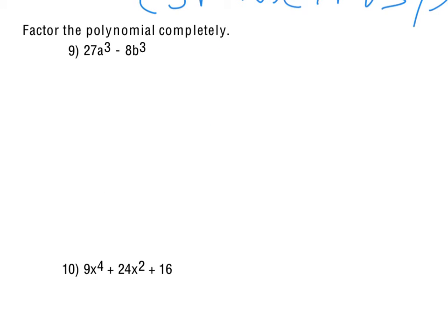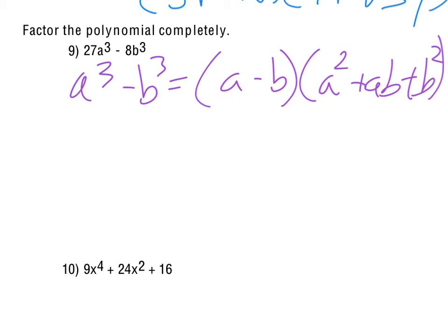For number 9, this is the difference of cubes pattern. There's no common factors or anything there. But we do end up, again, with a difference of cubes pattern, which looks like this. And so we cube root the 27a³. It gives us 3a. Cube root the 8b³, that gives us 2b. So that's the a minus b.